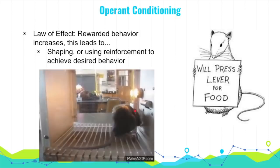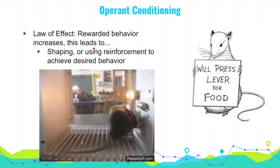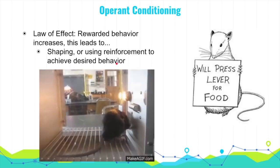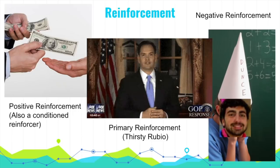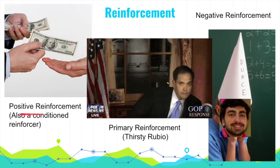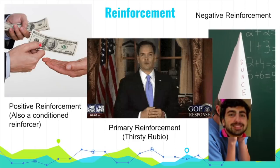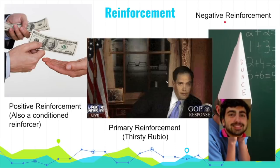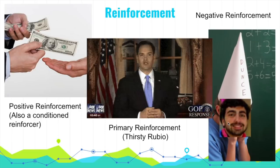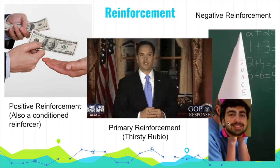The Skinner Box illustrates the law of effect: rewarded behavior is more likely to recur, and punished behavior will occur less. This process is called shaping — reinforcing behaviors to get closer and closer to a desired behavior. Shaping can occur through positive reinforcement, where you add a desirable stimulus (like giving money for good work), or negative reinforcement, where you remove something bad (like closing a door to block out noise). Remember: negative reinforcement is not punishment — it's the removal of something unpleasant.